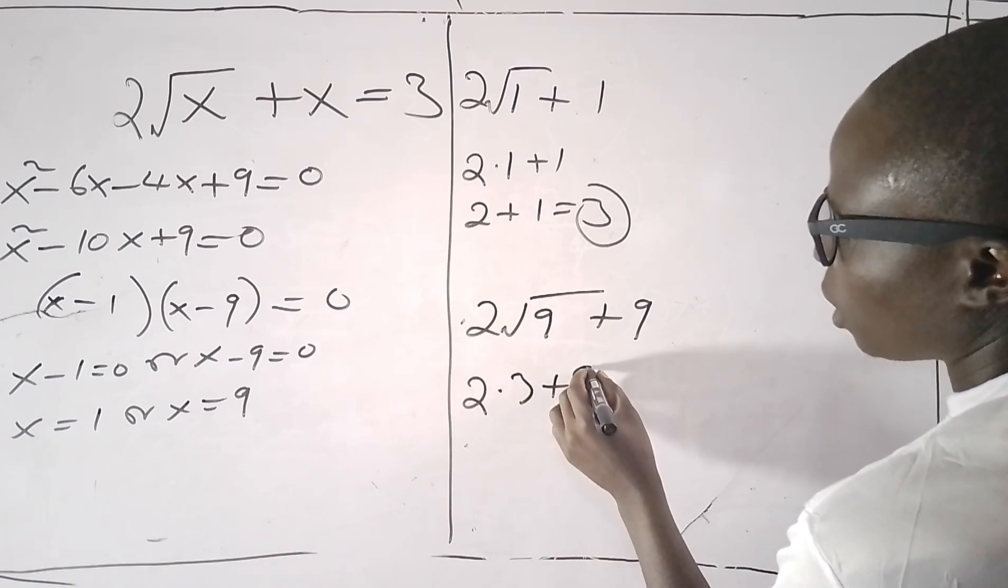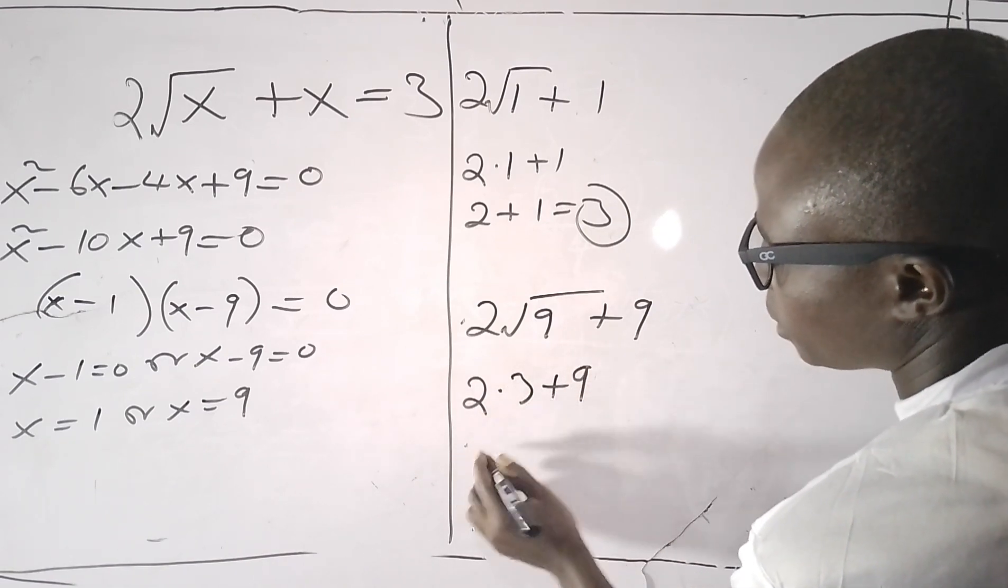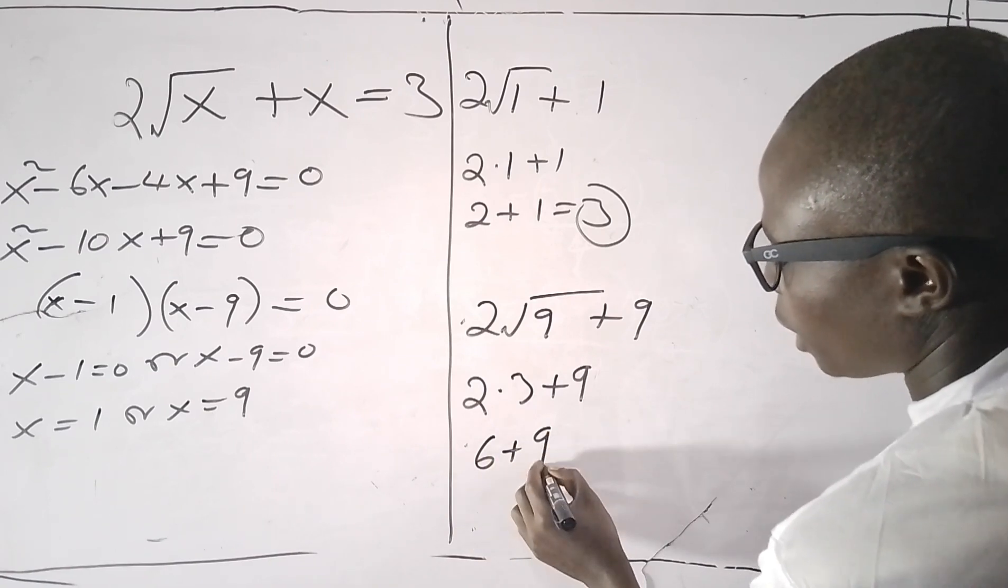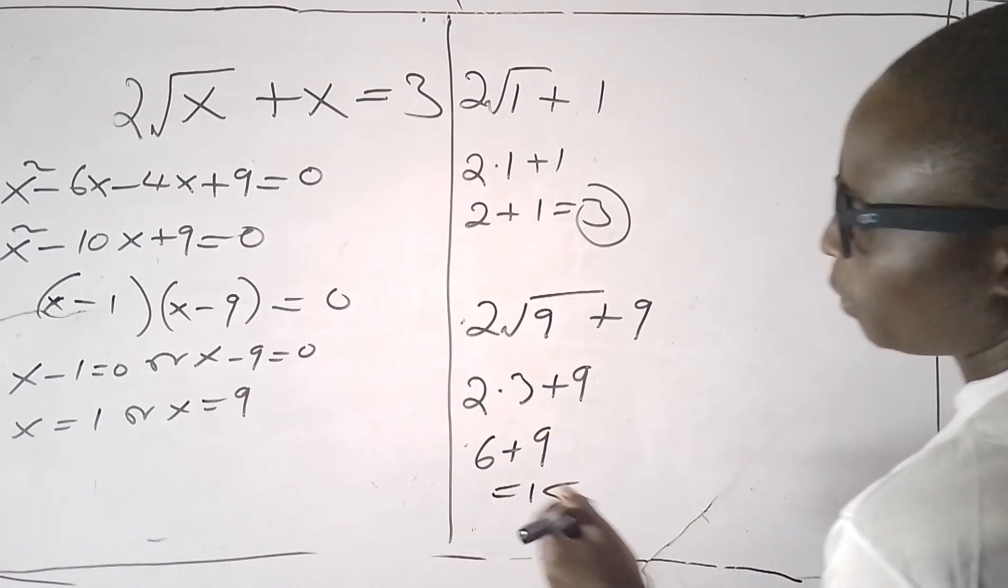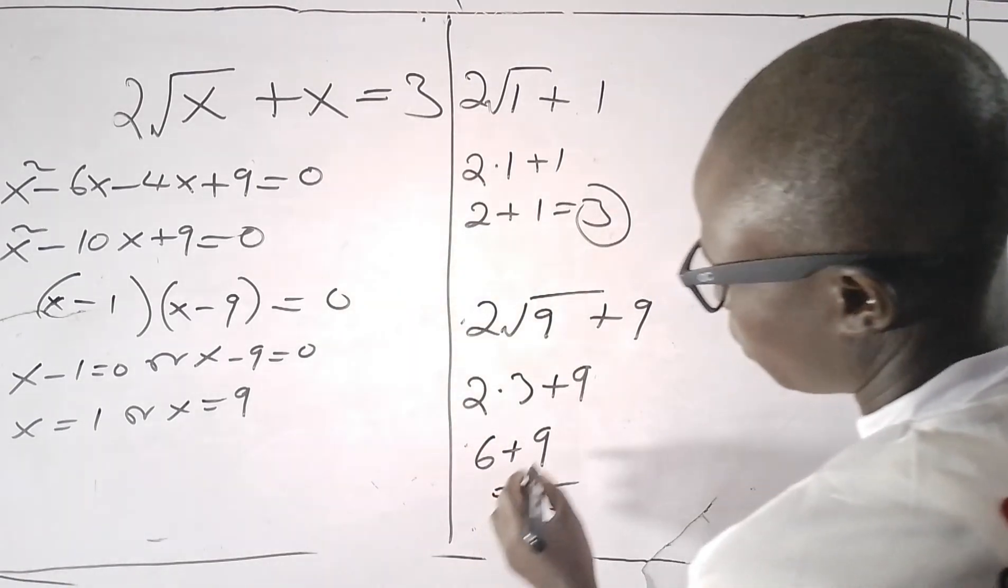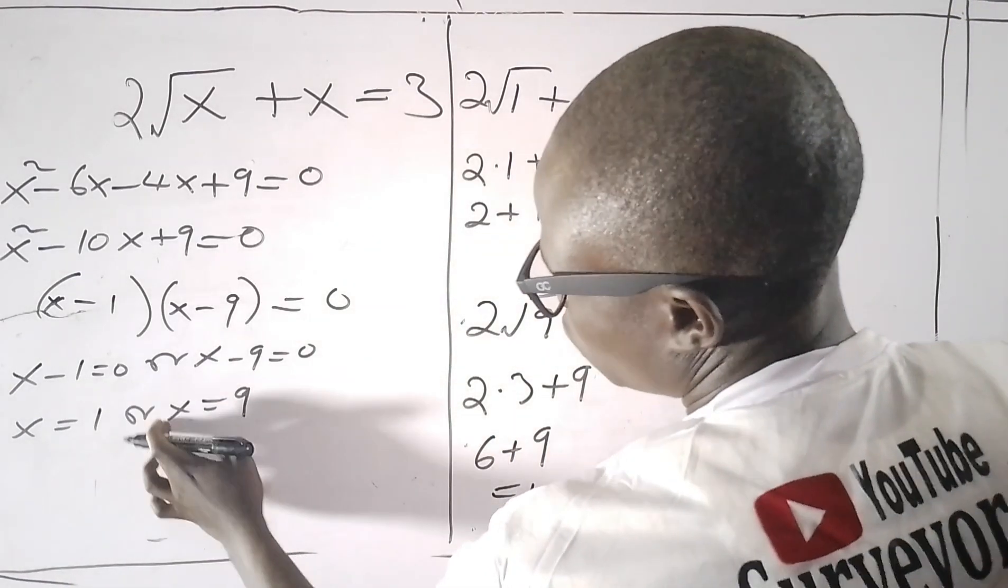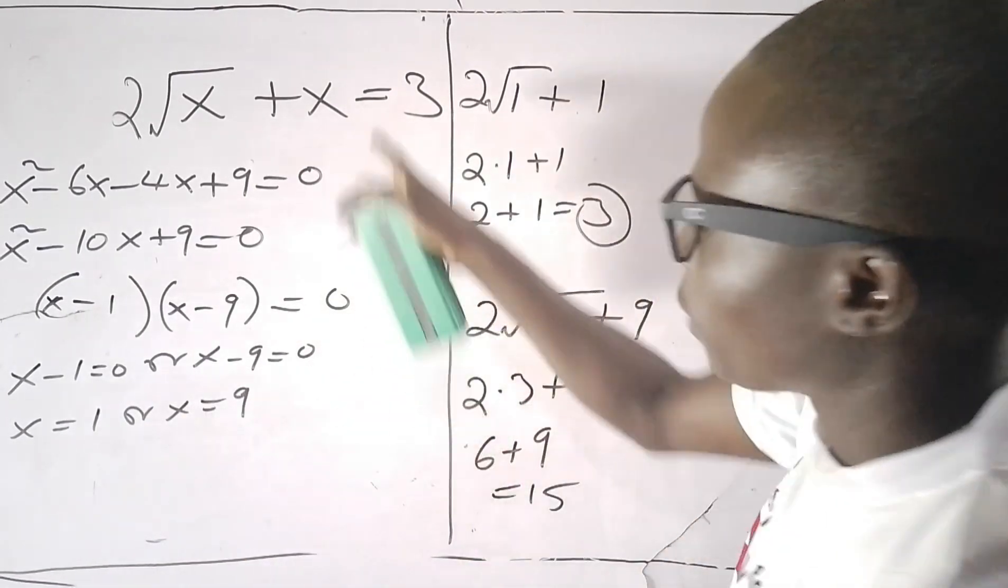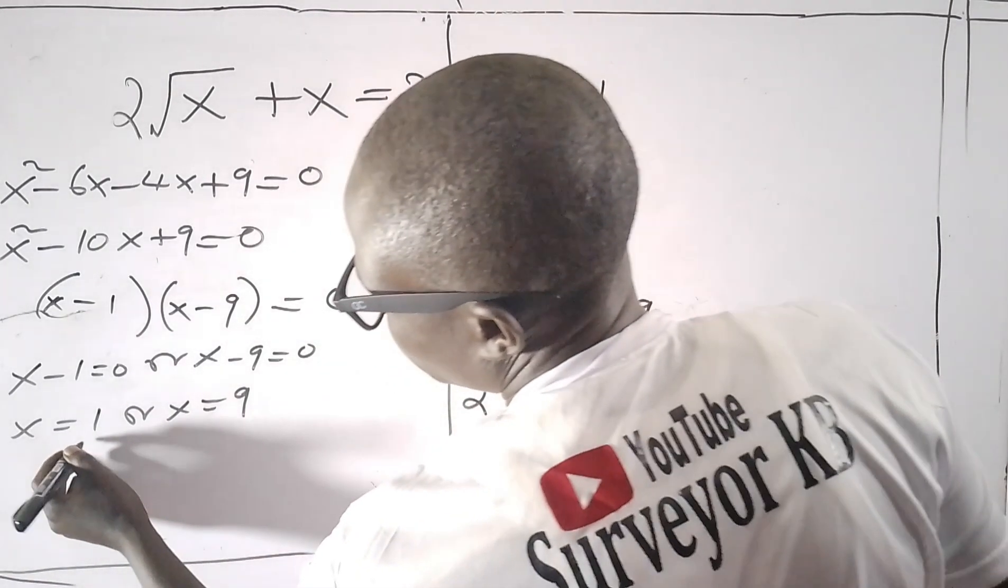2 times 3 is 6, plus 9. So we can see it's 15, and 9 is not the value that will satisfy this equation.